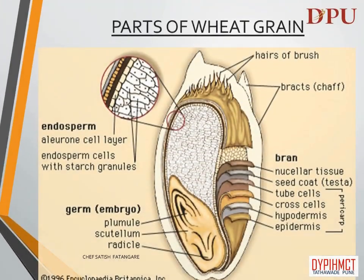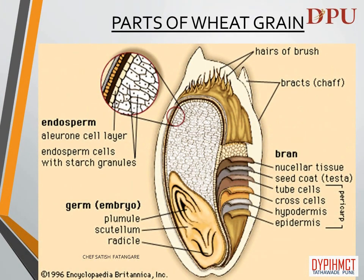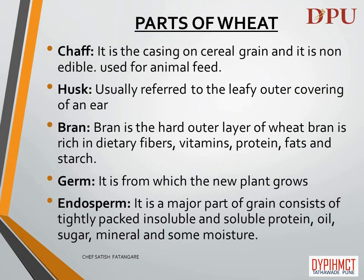In this slide we will discuss the different parts of wheat grain. The different parts of wheat are: Chaff — it is the casing on cereal grain and it is non-edible; it is used for animal feed. Husk — usually referred to the leafy outer covering of an ear. Bran — it is the hard outer layer of wheat, which is rich in dietary fibers, vitamins, protein, fats and starch.